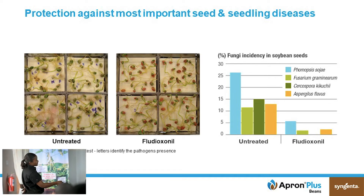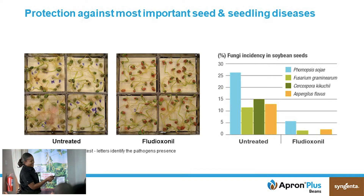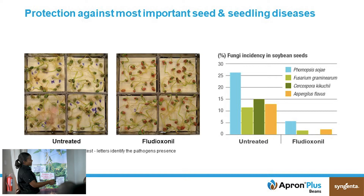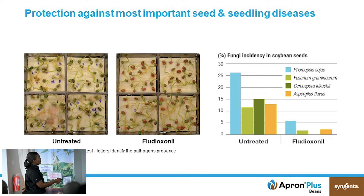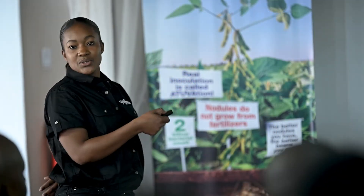When you look at Aspergillus, in the untreated the incidence went above 10%, and in the fludioxonil treatment it was almost 2%. When you have these pathogens present, you're going to lose out on yield because germination will be low. All these pathogens affect germination, so in the end you're already going to lose out on yield.